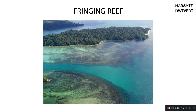If you have ever taken a flight out of Mumbai or out of a coastal area — for example, from Mumbai to Maldives — when you will be entering the ocean you will be seeing these types of structures. Or if you have taken a flight from the Andaman and Nicobar Islands, whenever you are entering a sea you will see these types of structures. Basically, what are these? These are fringing reefs — these are shore reefs.